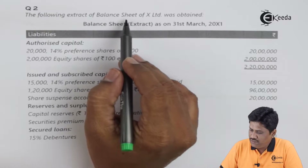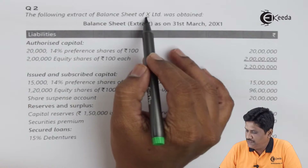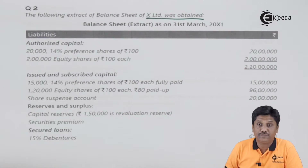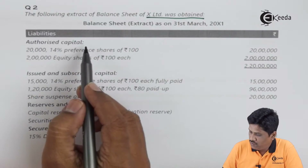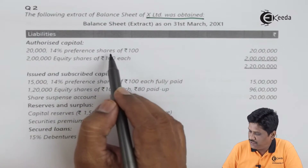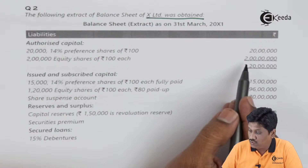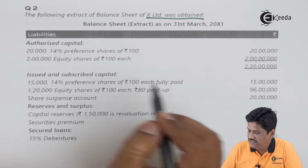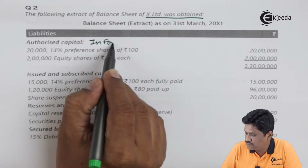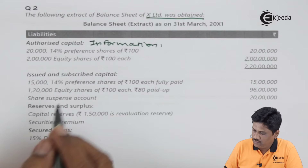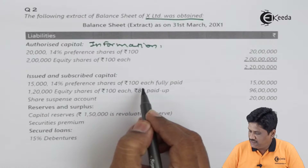Let's read the question: 'Following extracts of balance sheet of X Limited was obtained.' So only the extract of the balance sheet is given, not the complete balance sheet. Authorized capital: twenty thousand 14% preference shares of rupees 100 each — two lakhs; equity shares of rupees 100 each — twenty lakhs; totaling two crore. This detail is given. Authorized capital is only information.